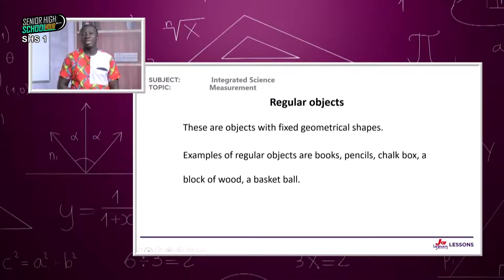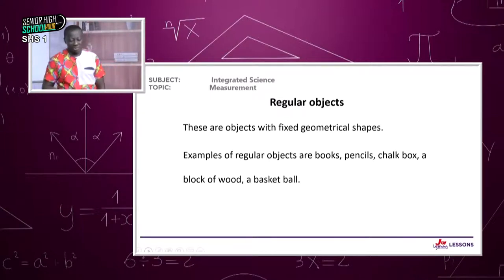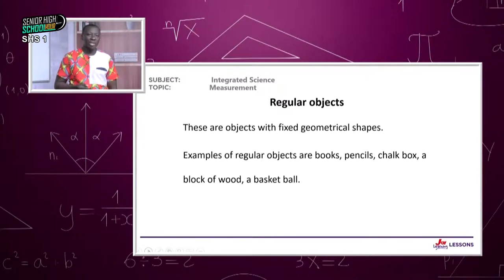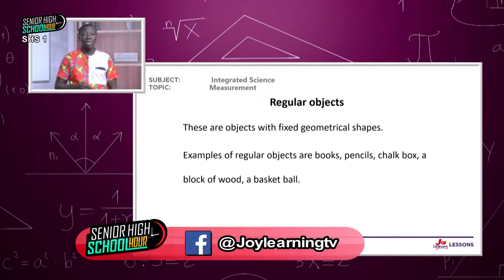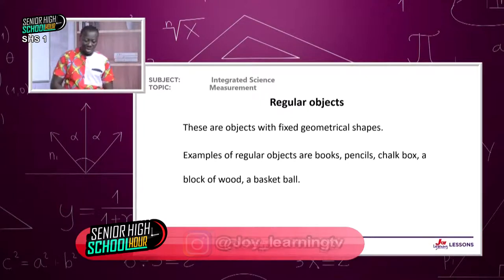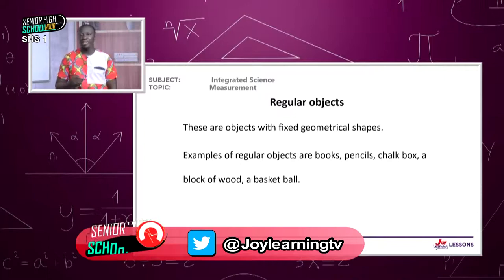We've dealt with liquids. What about solids? Liquids are easy to measure using a burette or measuring cylinder. Most solids can be classified into two categories: regular objects and irregular objects. Regular objects are objects with fixed geometrical shapes — their dimensions don't change.